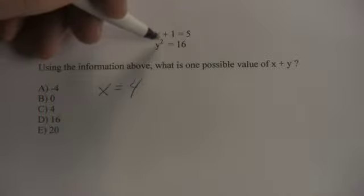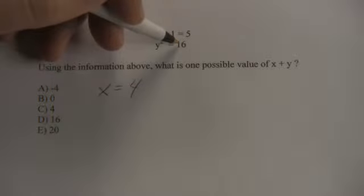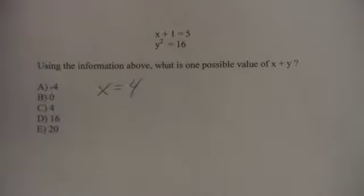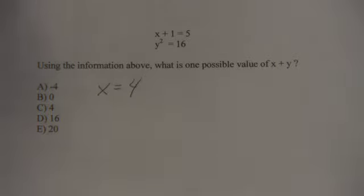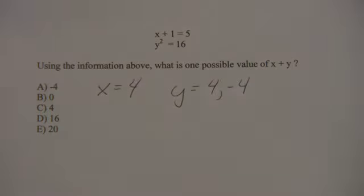Now when it says y squared equals 16, what people forget is that y can either be positive 4 or negative 4. So the two possible values for y are either positive 4 or negative 4.